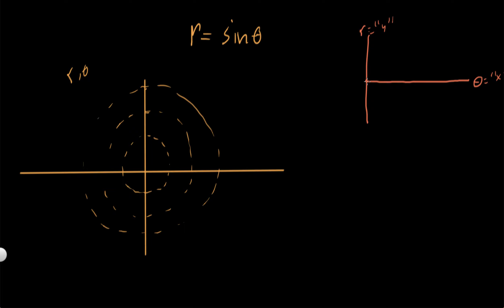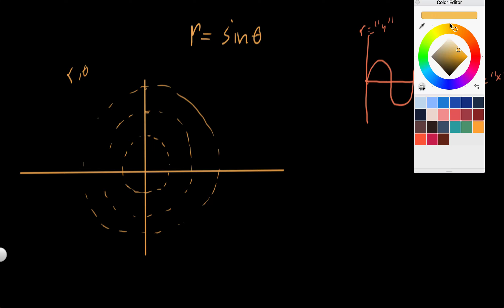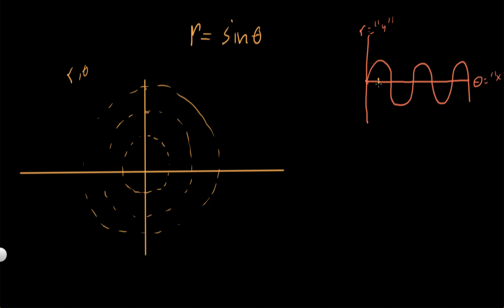The sine function looks like this: it starts at zero, goes up, then down, then up and down, and repeats. We label key points over one period: this is zero, this is pi over 2 where sine is at its maximum, this is back at zero which is pi, this is 3 pi over 2, and this is back at 2 pi — that's one full period.